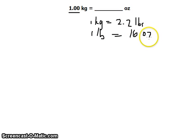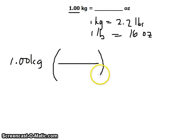Now, we will use these 2 conversion factors for our solution. Proceeding, we write 1.00 kilograms, multiply it by the first conversion factor.